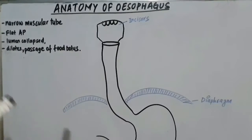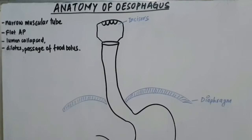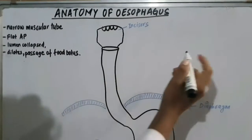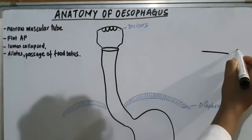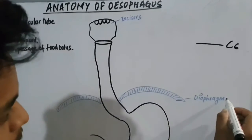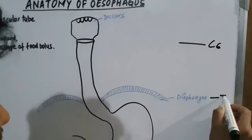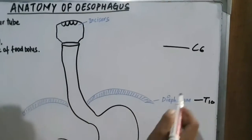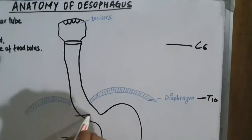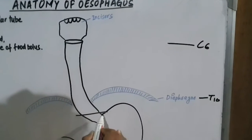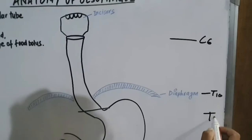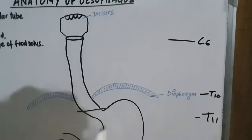Talking about the extent of the oesophagus: it extends from the C6 vertebra, passes through the diaphragm at the T10 level, and ends at the cardiac end of the stomach at the T11 level.